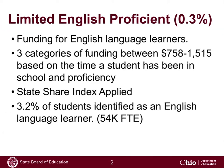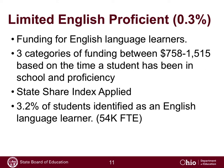The last component of student-driven funding is for limited English proficient students — a very small part of the overall formula, covering about 54,000 students, or 3.2% identified as English language learners. Similar to career tech and special ed, there are three different categories ranging between $758 and a little over $1,500. This is based on the time a student has been in school in the United States and their proficiency in acquiring English. Funding is provided at the highest level in the first year of U.S. enrollment, then tiers down as the student gains higher mastery in English.